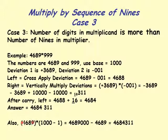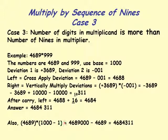Alternatively, when the multiplicand is longer than the sequence of 9's, the easiest approach is to convert: 4689 times 999 equals 4689 times (1000 minus 1) equals 4,689,000 minus 4689, which gives 4,684,311. This direct conversion is probably the best method in this case.